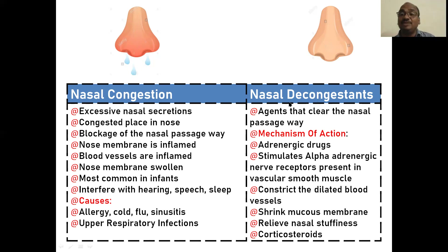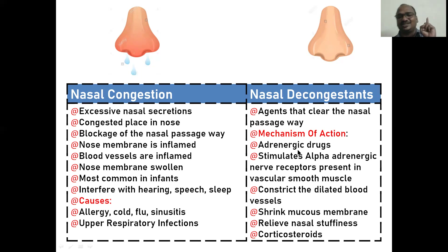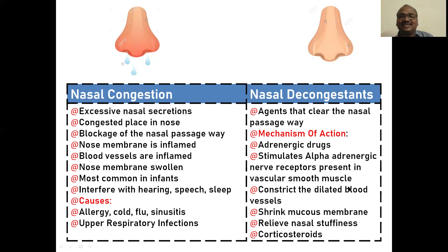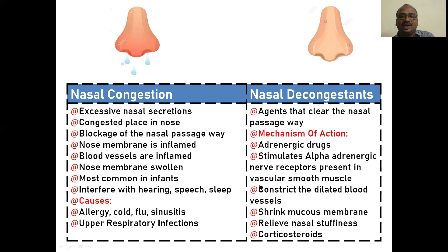Nasal decongestants — the name is opposite to congestion — are drugs and agents that clear the nasal pathway. The mechanism mainly uses adrenergic drugs, also known as sympathomimetic drugs. In the sympathetic system, your airway is increased. These drugs stimulate the alpha adrenergic receptors present in the vascular smooth muscle — this is very important — which constricts the dilated blood vessels, causing shrinkage in the mucous membrane.